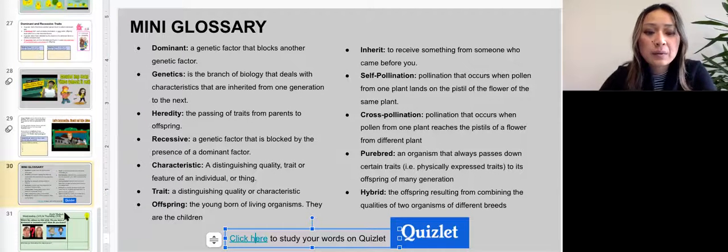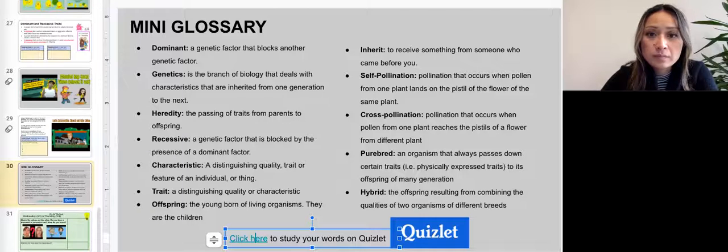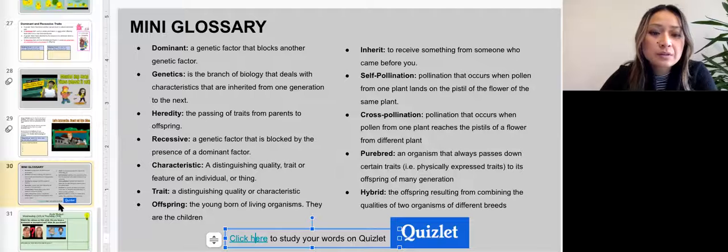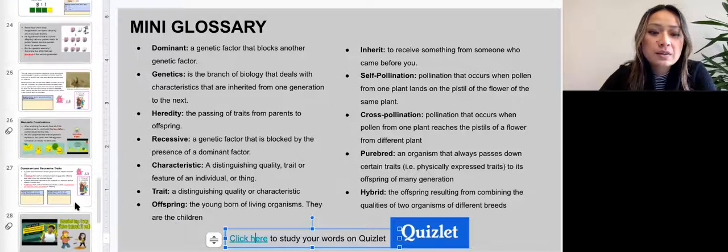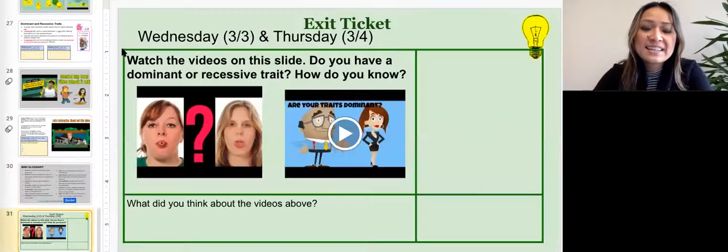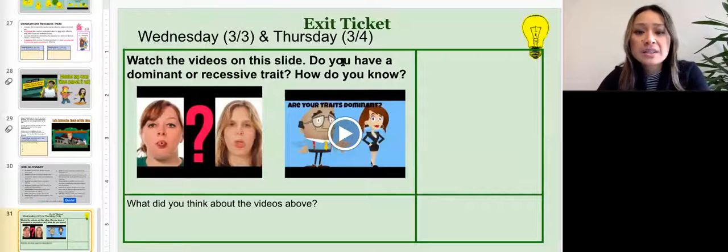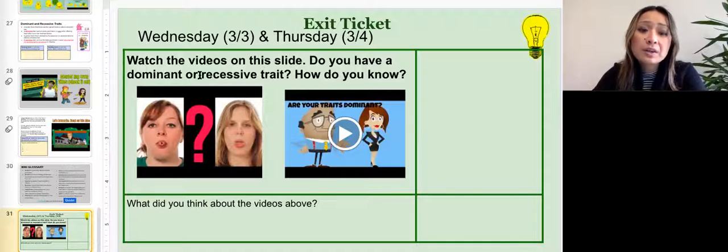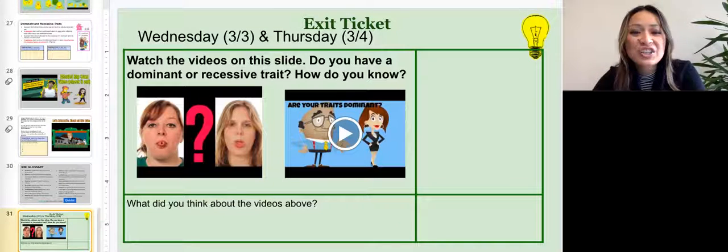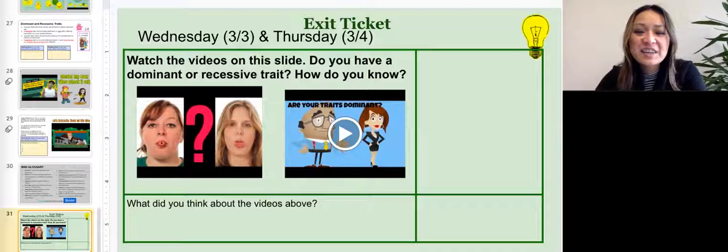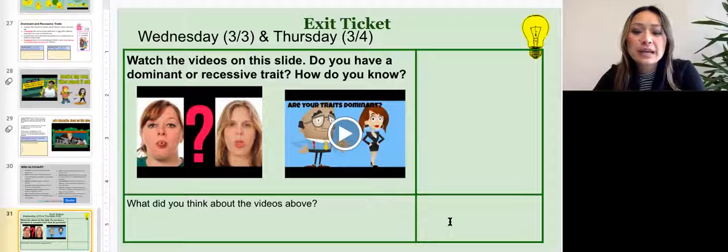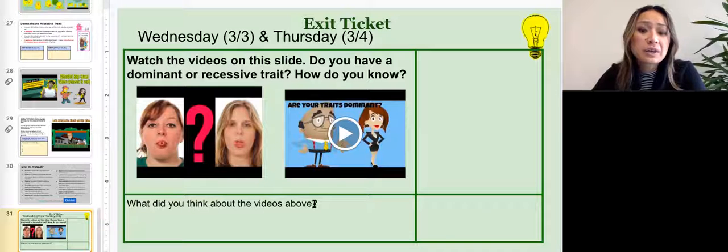Finally, you've got your exit ticket on slide 31. And here it says to watch the videos on this slide. Do you have a dominant or recessive trait? How do you know? So watch this video and this video. Do you have a dominant or recessive trait? How do you know? And then for the next question, what do you think about the videos above? I hope you have a fantastic weekend and let me know if you have any questions.